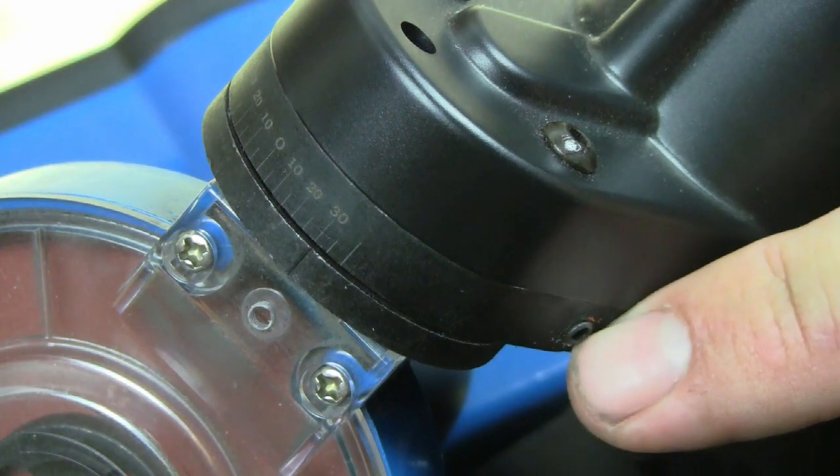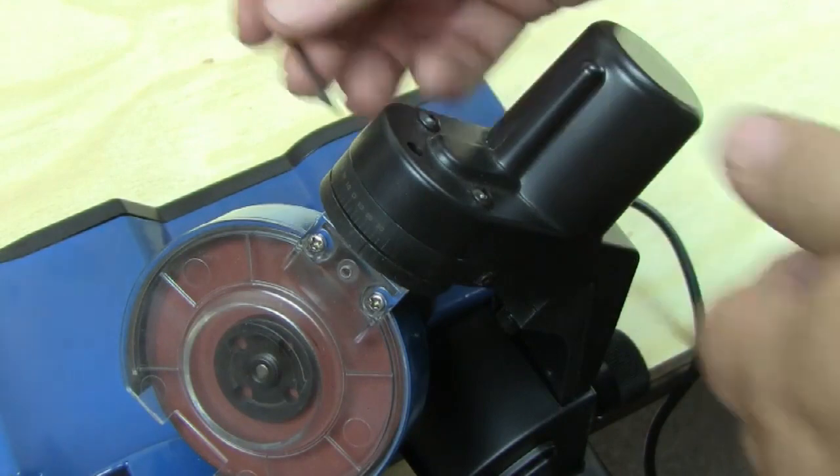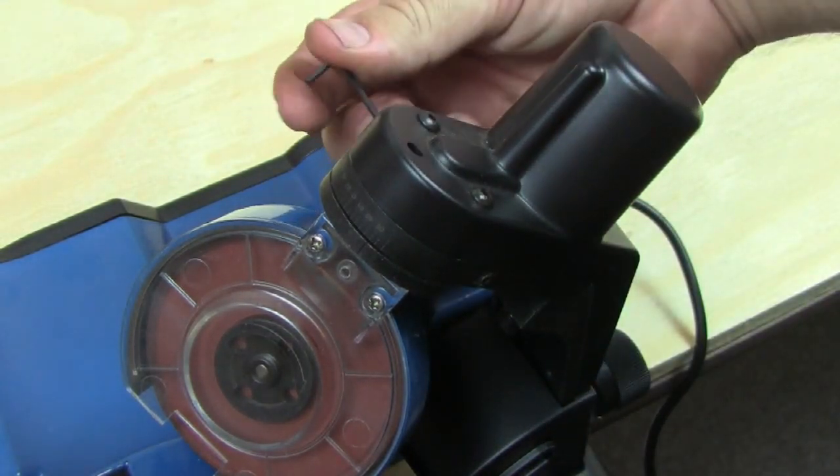To make adjustments, we're going to use these little screws. There's one on either side of the head here. What we're going to do is simply, using the included Allen wrench, either tighten or loosen these Allen screws.